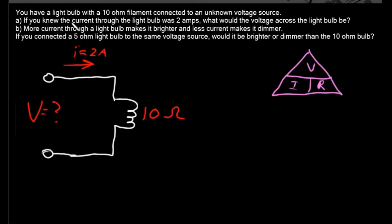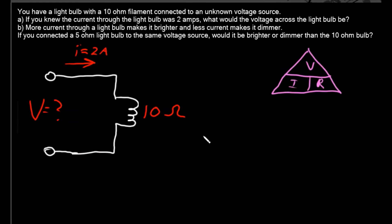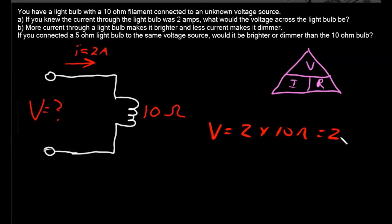Next question: you have a light bulb with a resistance of 10 ohms. You connect it to an unknown voltage source, but you know the current through that light bulb is 2 amps. How do you find the voltage? This is one of the simplest calculations in Ohm's Law — voltage equals current times resistance: 2 amps times 10 ohms equals 20 volts.